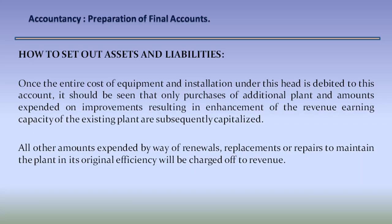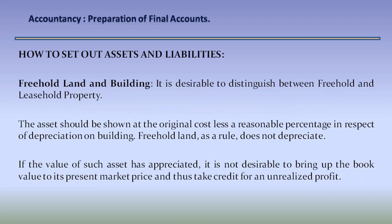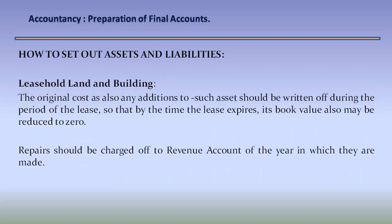All other amounts expended by way of renewals, replacements, or repairs to maintain the plant in its original efficiency will be charged off to revenue. Freehold land and building: it is desirable to distinguish between freehold and leasehold property. The asset should be shown at original cost less a reasonable percentage for depreciation on building. Freehold land, as a rule, does not depreciate. If the value has appreciated, it is not desirable to bring up the book value to current market price and thus take credit for an unrealized profit. Leasehold land and buildings: the original cost and any additions should be written off during the period of the lease, so that by the time the lease expires, its book value is reduced to zero. Repairs should be charged off to revenue account of the year in which they are made.